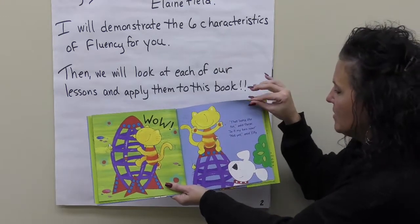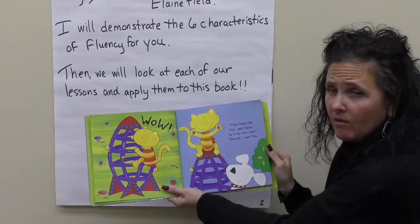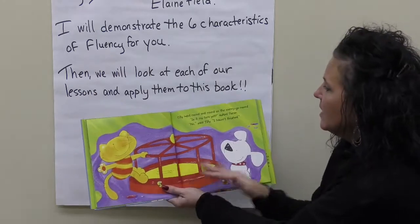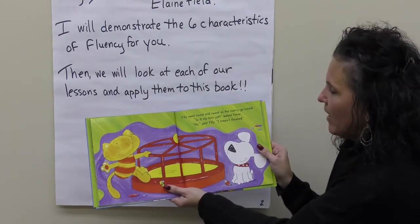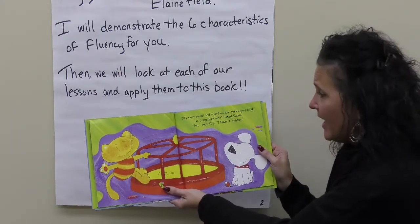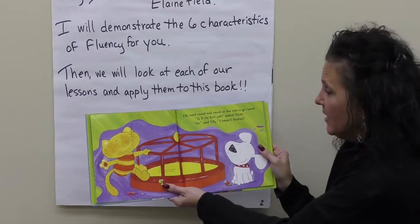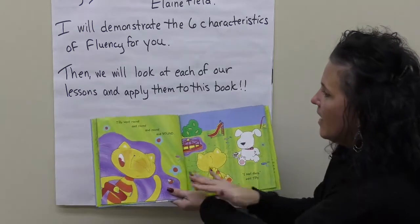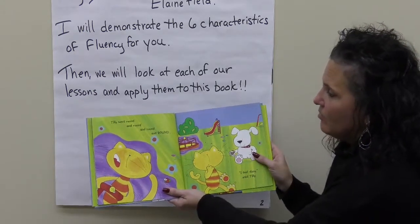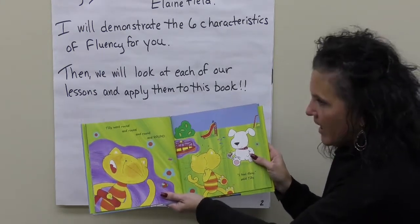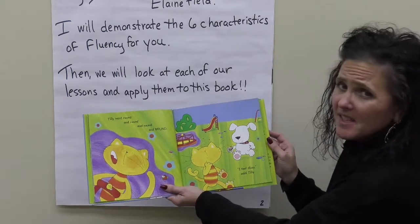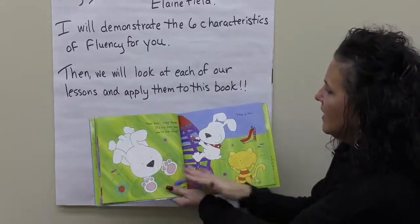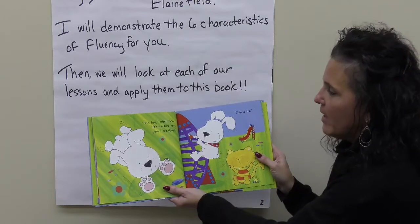Is it my turn now? Not yet, said Tilly. Tilly went round and round on the merry-go-round. Is it my turn yet? Asked Oscar. No, said Tilly. I haven't finished. Tilly went round and round and round and round. I feel dizzy, said Tilly. Hee hee, cried Oscar. It's my turn now. You're too dizzy.